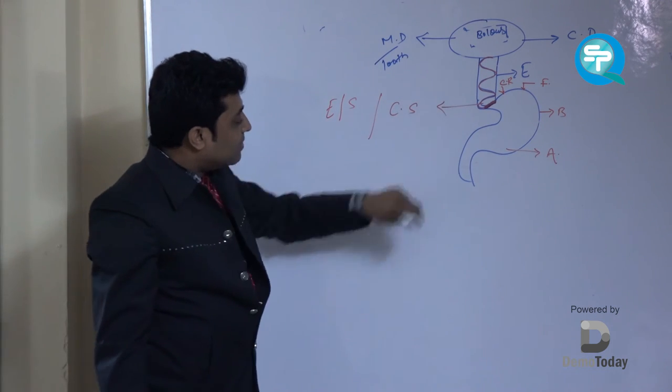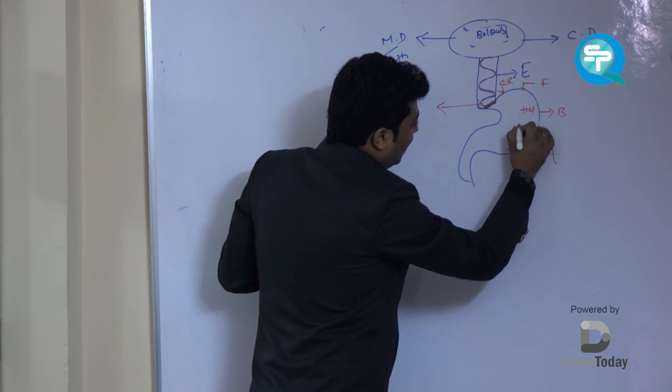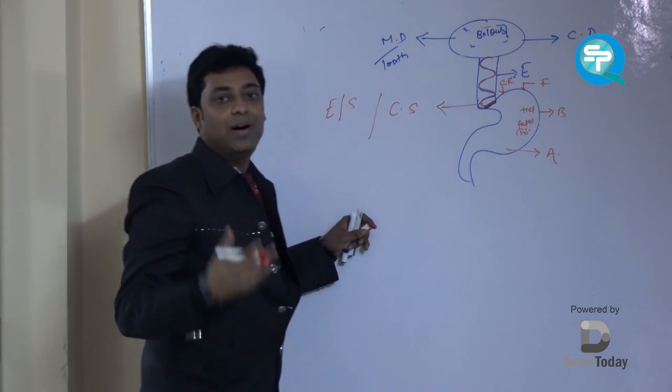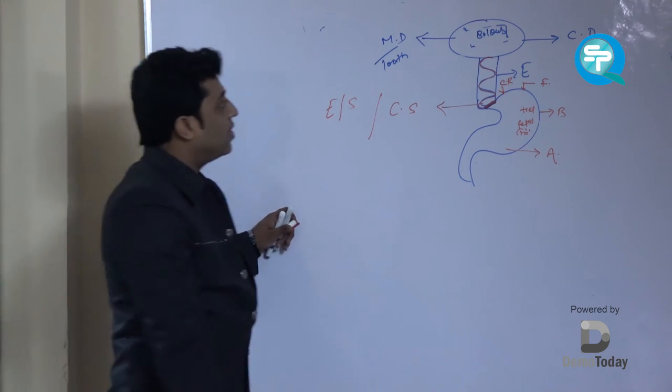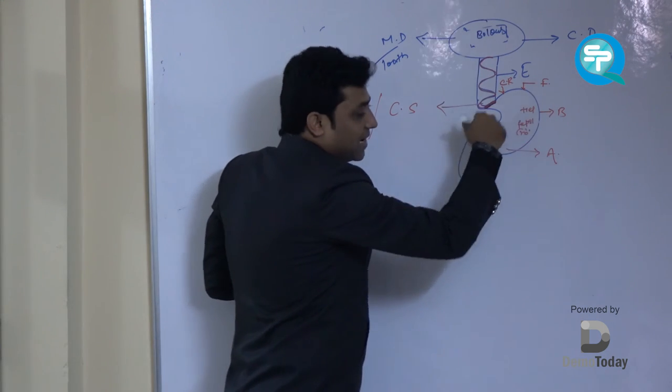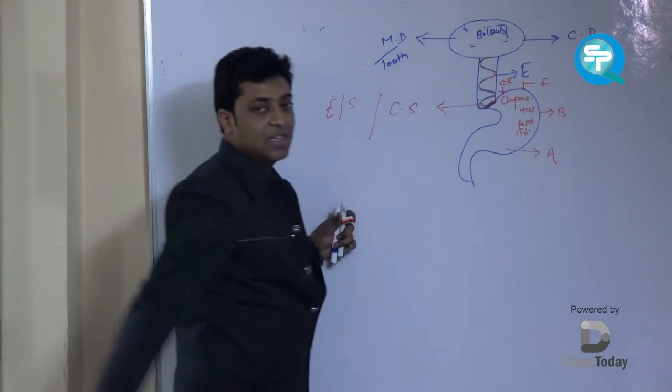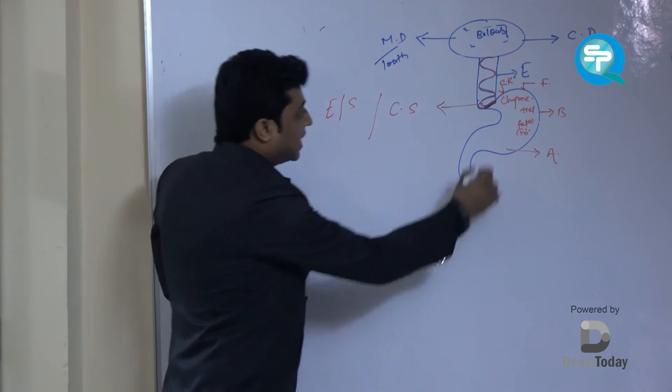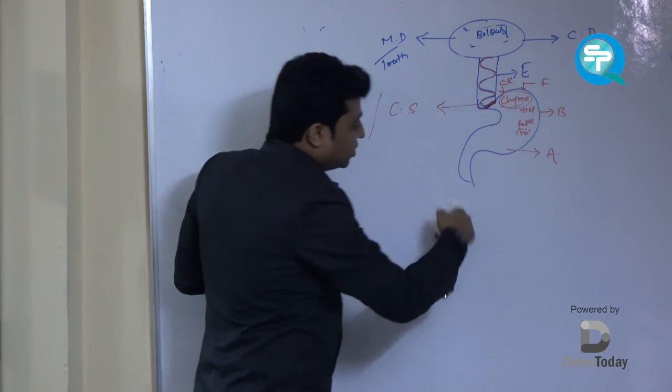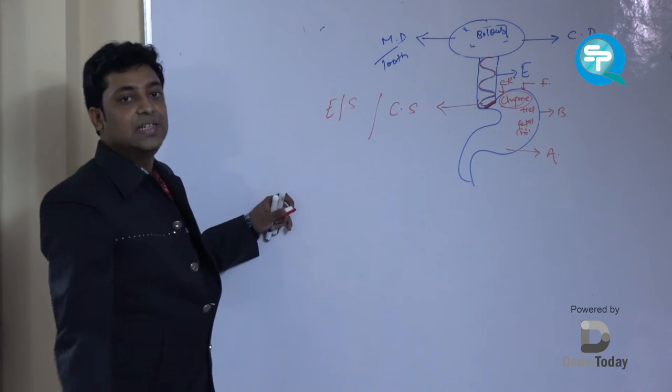Here in the stomach we have hydrochloric acid, we have pepsin, we have gastric juices. Now the bolus mixes with this gastric juices and is known as chyme.